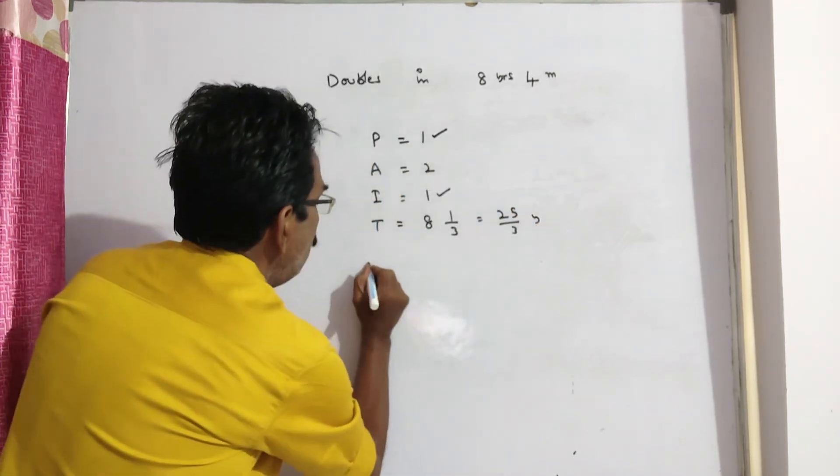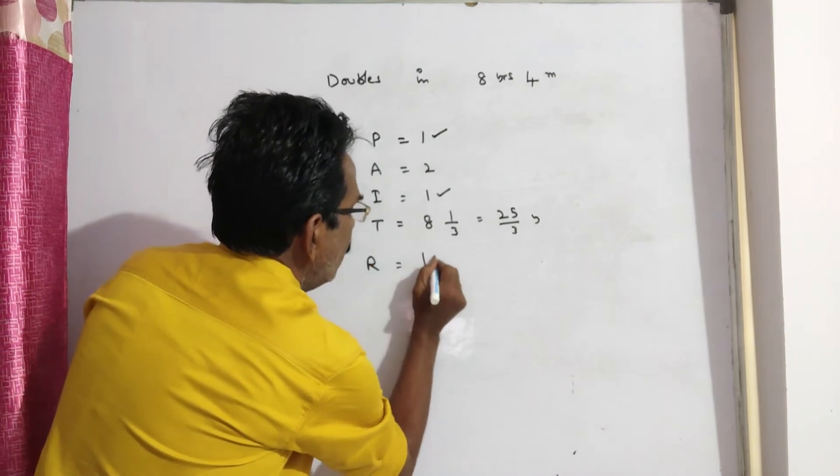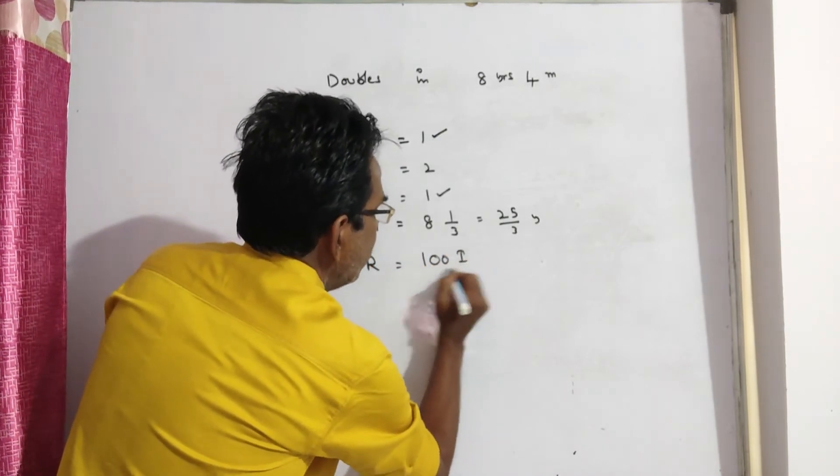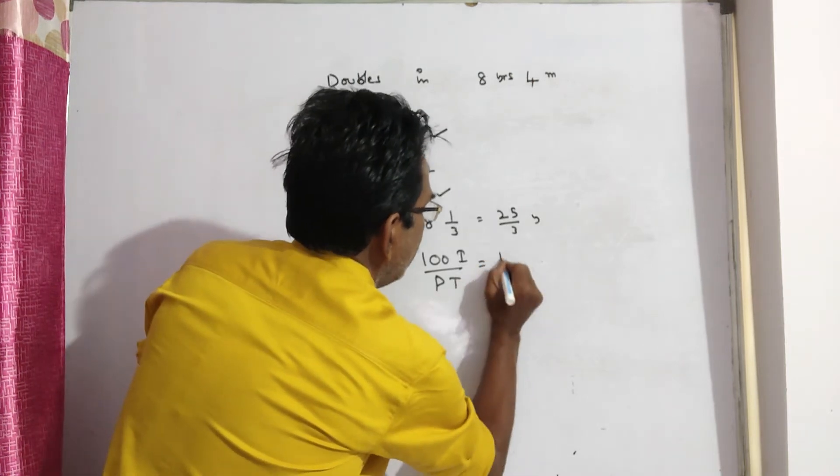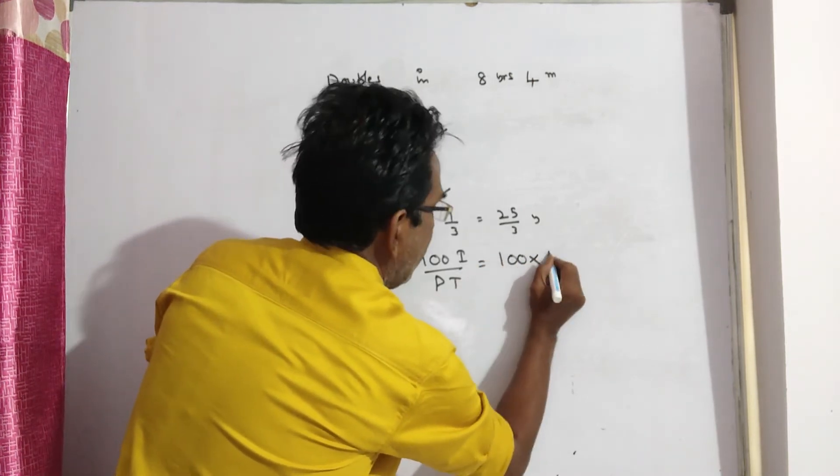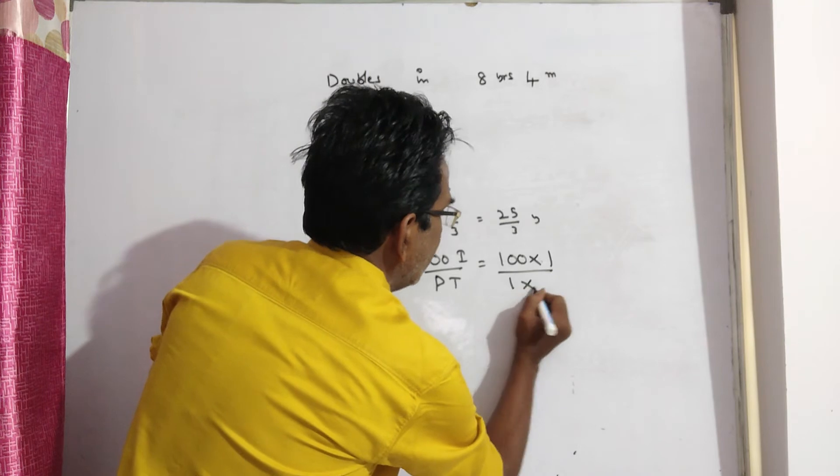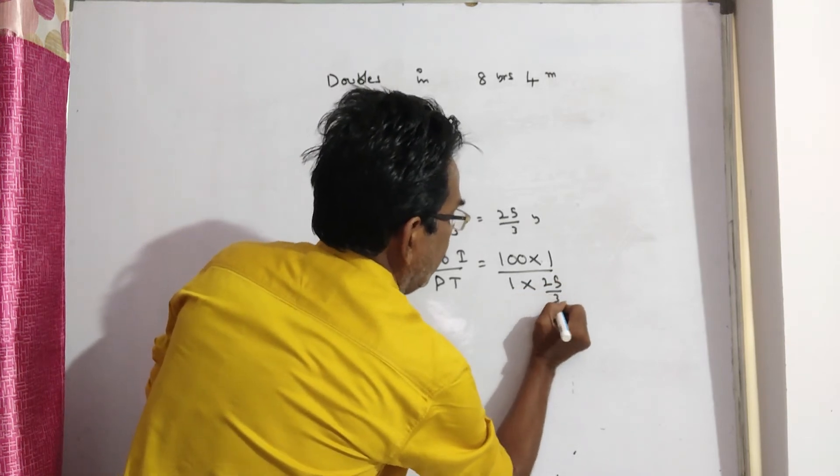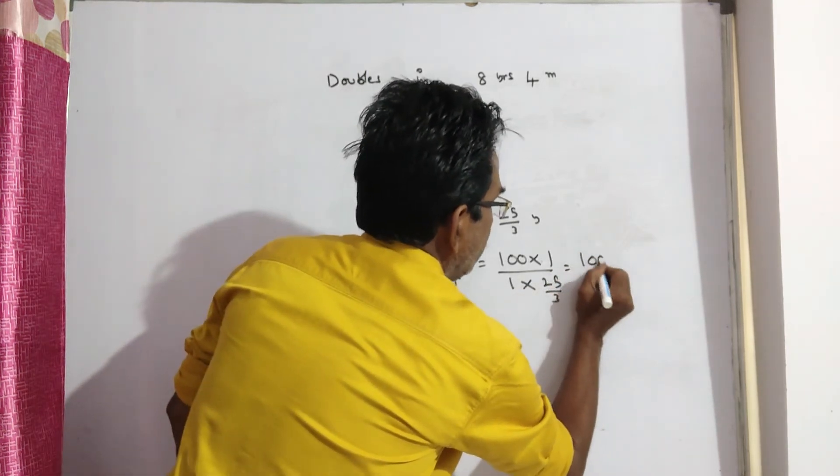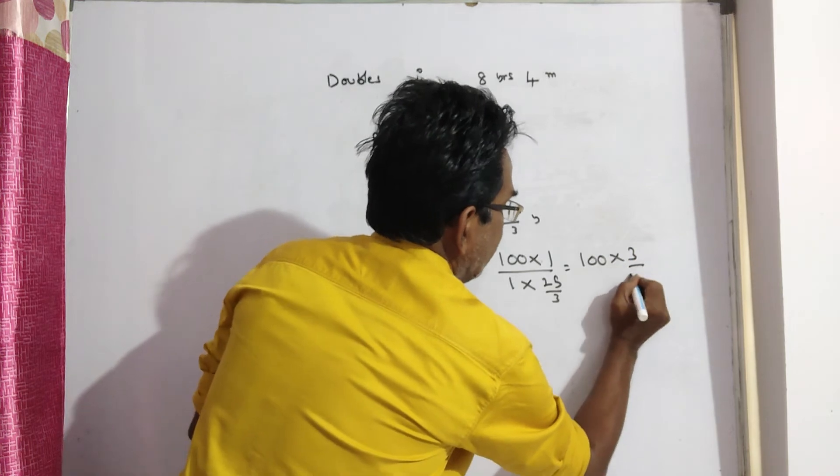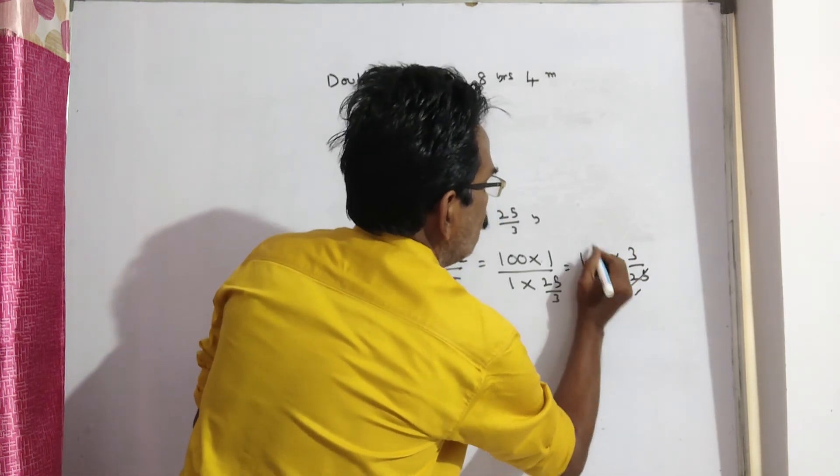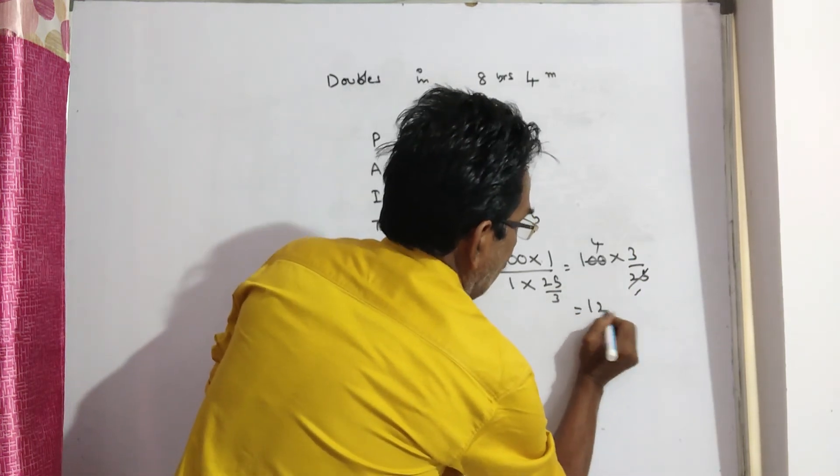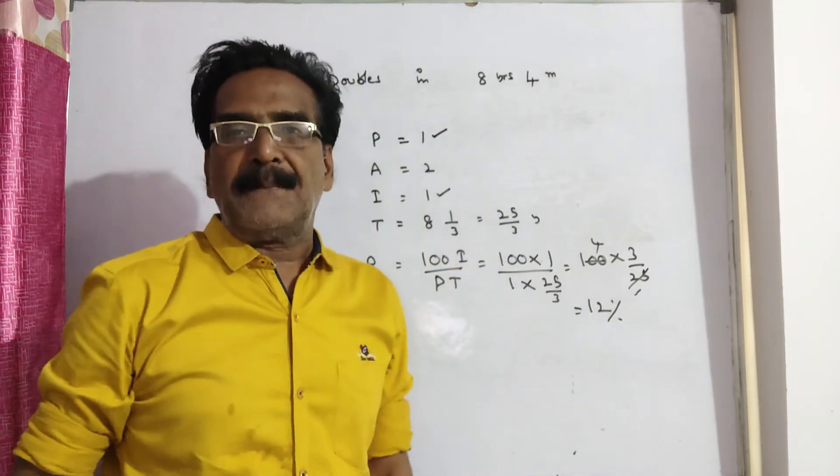Now, R is equal to 100I by PT. 100 into I which is 1, P is 1, T is 25/3, that is equal to 100 into 3/25, which gives 12. So 12 percent is your answer friends, 12 percent is your answer.